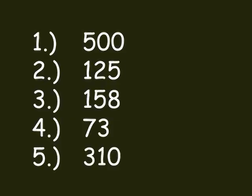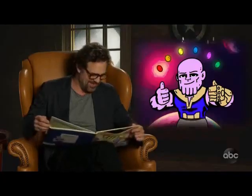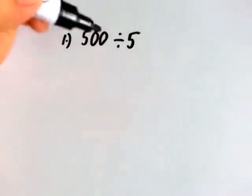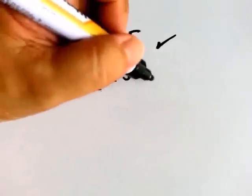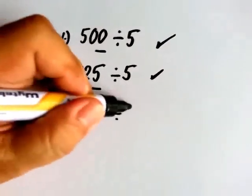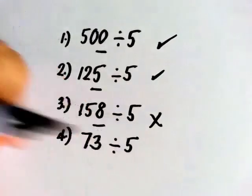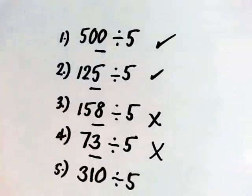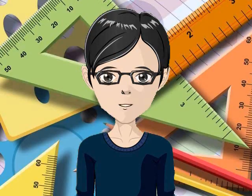I-pause na lang yung video kung kulang kayo sa oras. Let's check your answers. Is 500 divisible by 5? Yes, it ends in 0. Is 125 divisible by 5? Yes, it ends in 5. Is 158 divisible by 5? No. Is 73 divisible by 5? No. Is 310 divisible by 5? Yes, nag-e-end sya sa 0. Did you get everything correct?